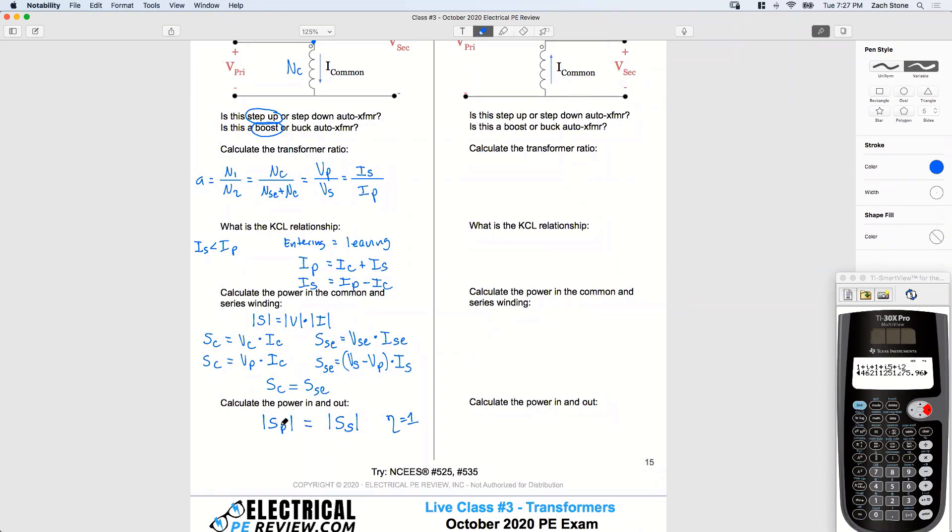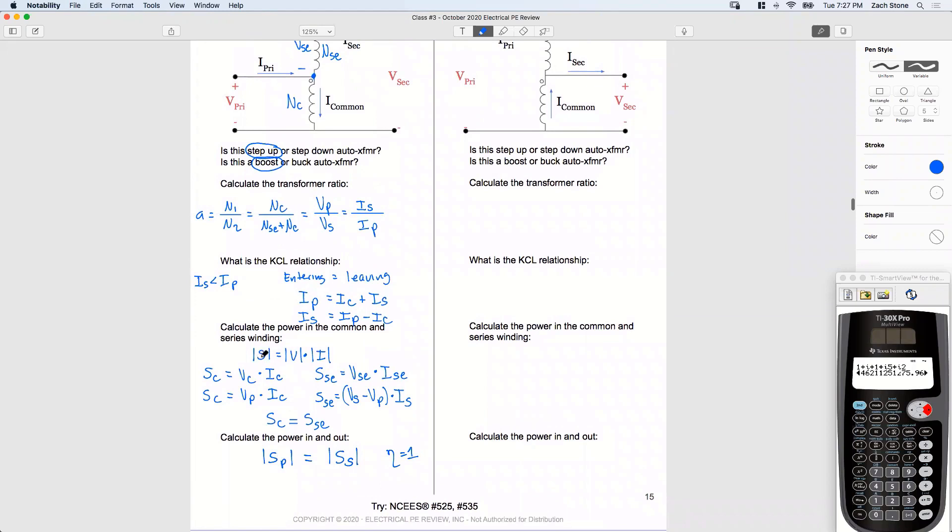So looking at the primary side, what's my power in? Look, use the single phase apparent power formula. It's going to be my primary voltage times my primary current. V primary times I primary is equal to the primary power. So VP times IP. And I know I'm mixing up magnitude brackets here and there. So these are all magnitude values. I'm just in the habit of using them with this formula.